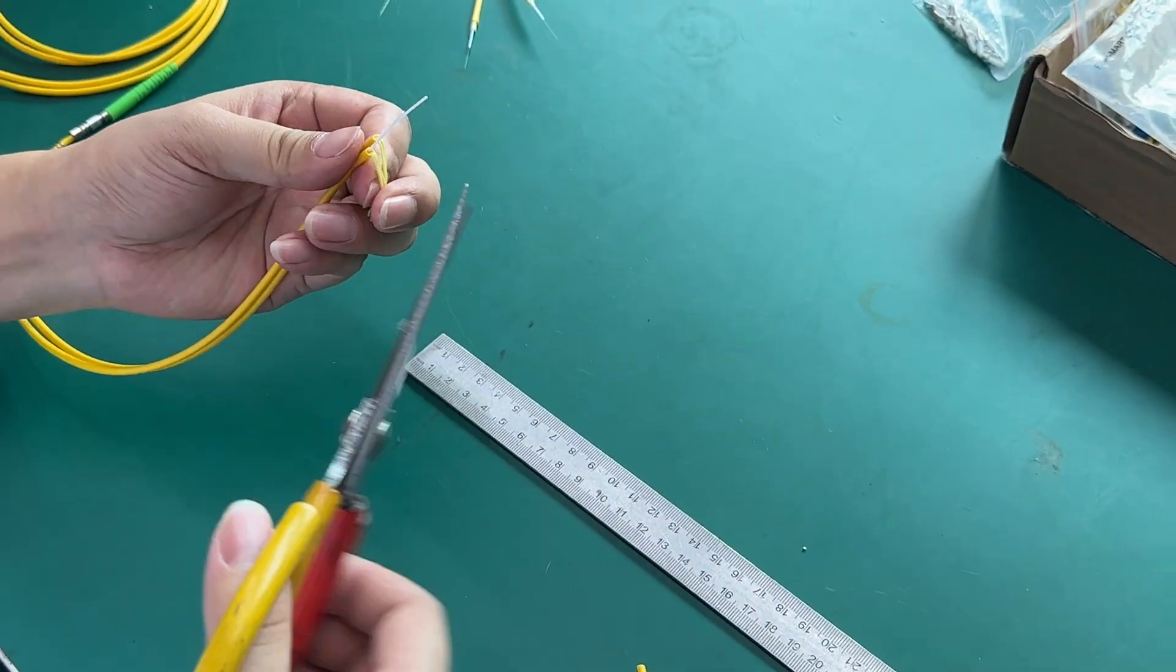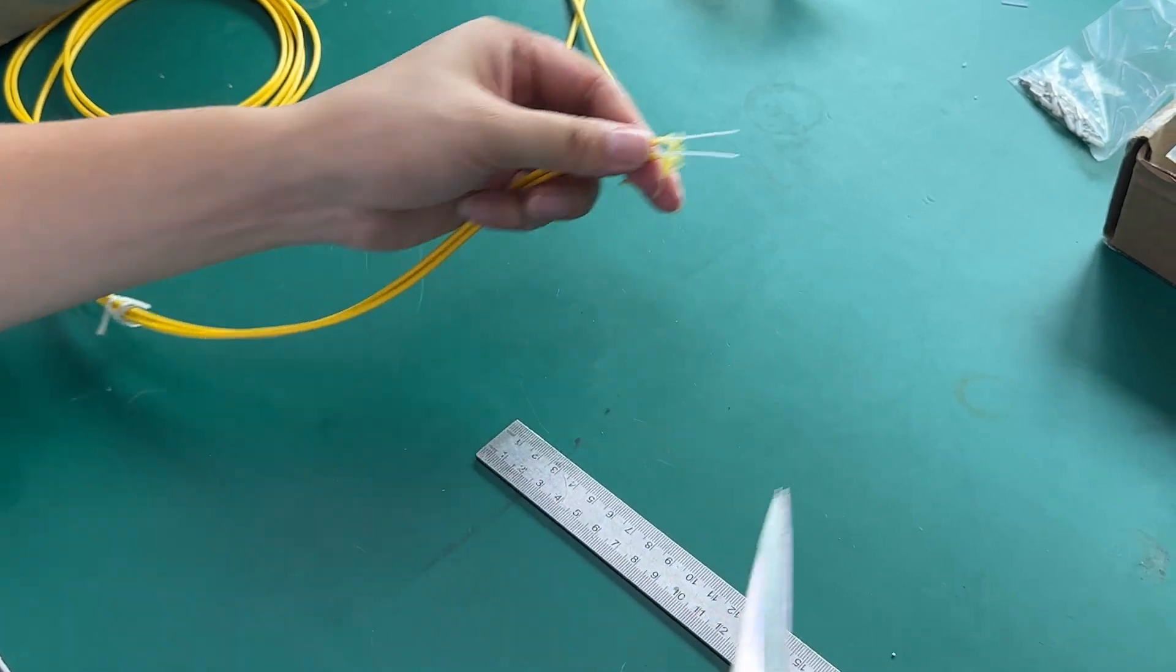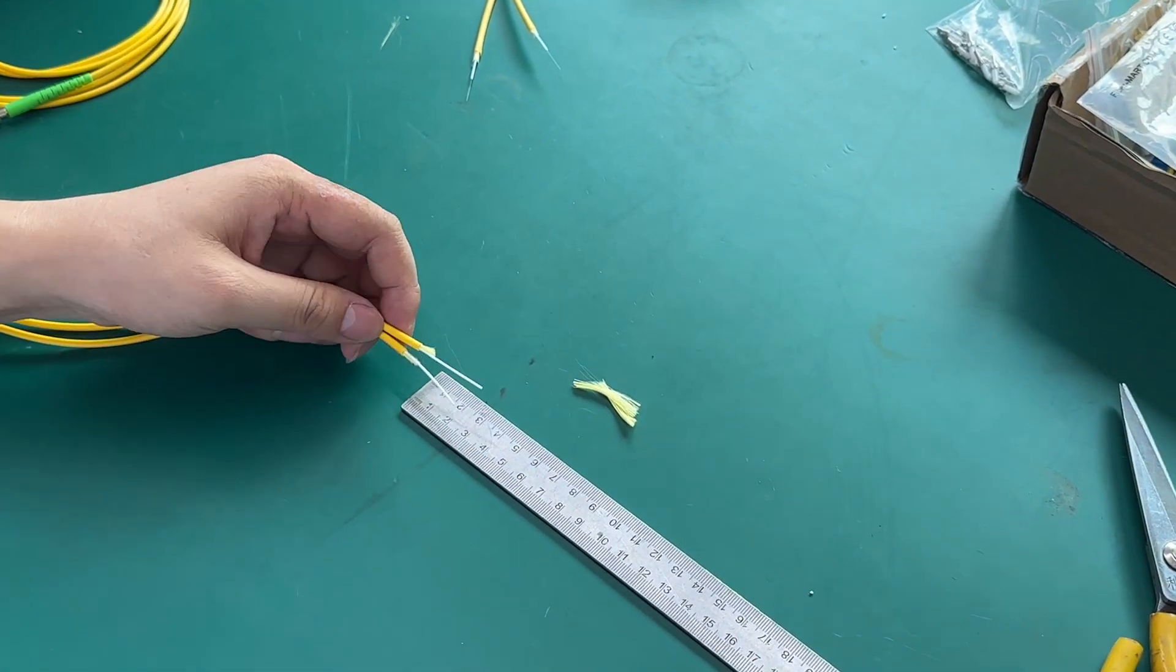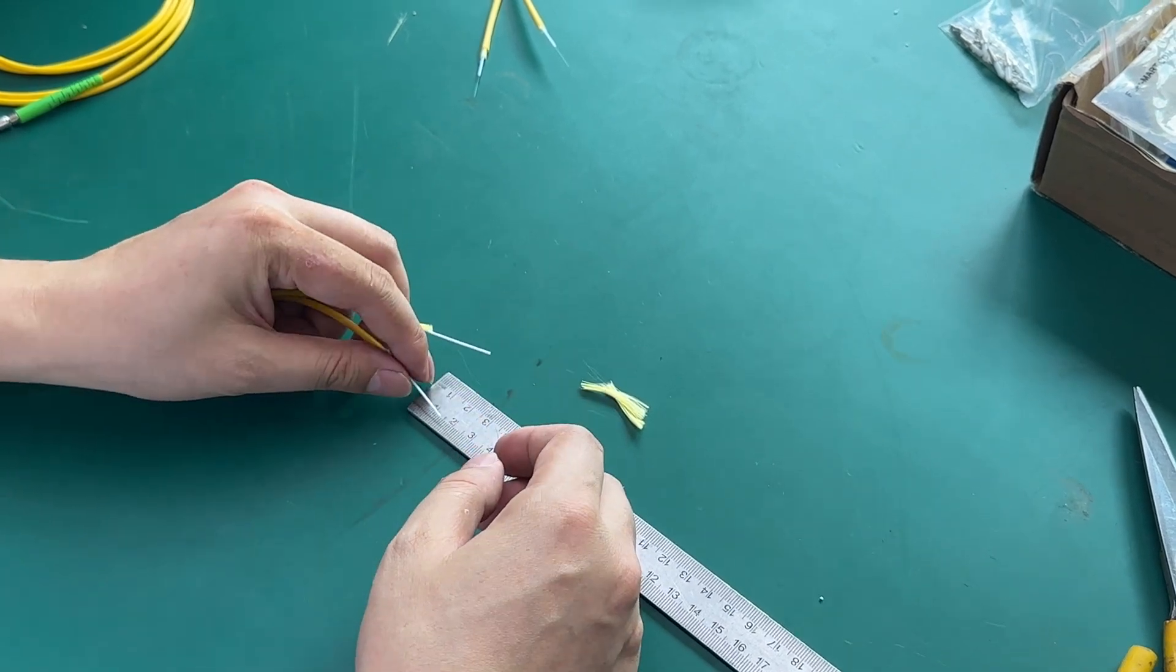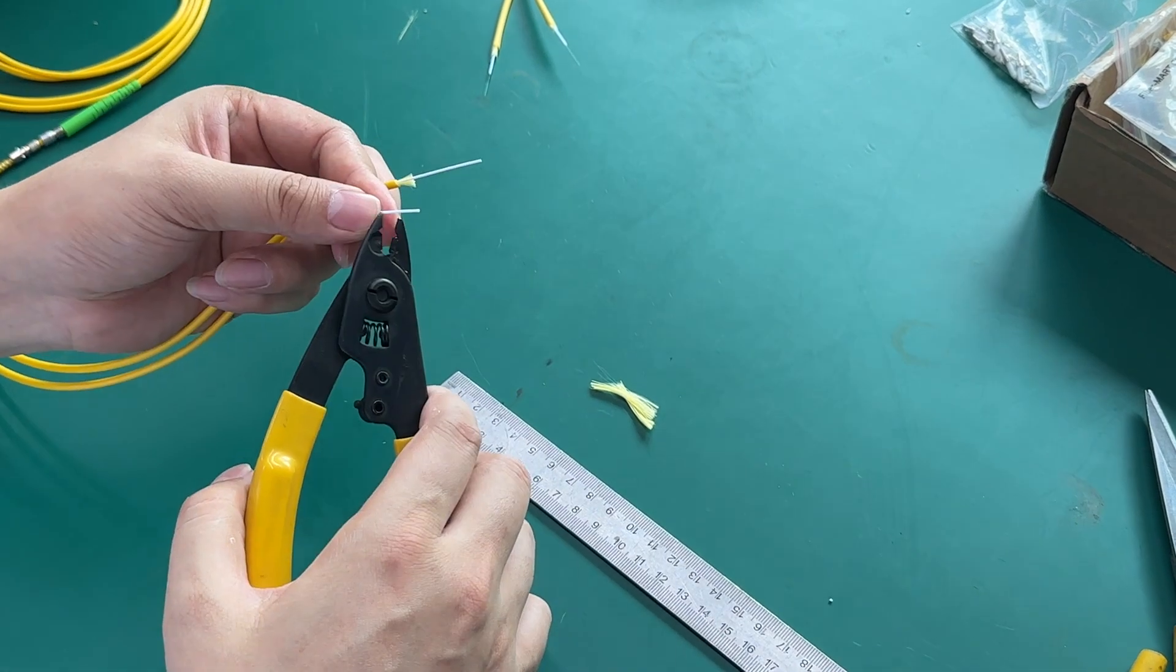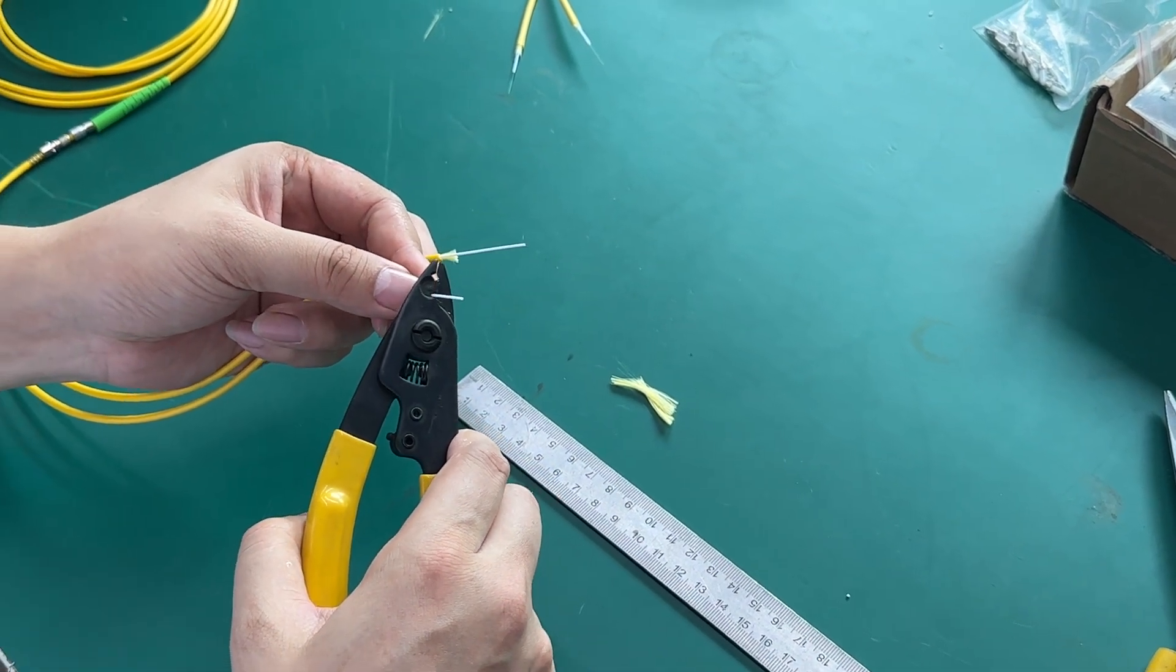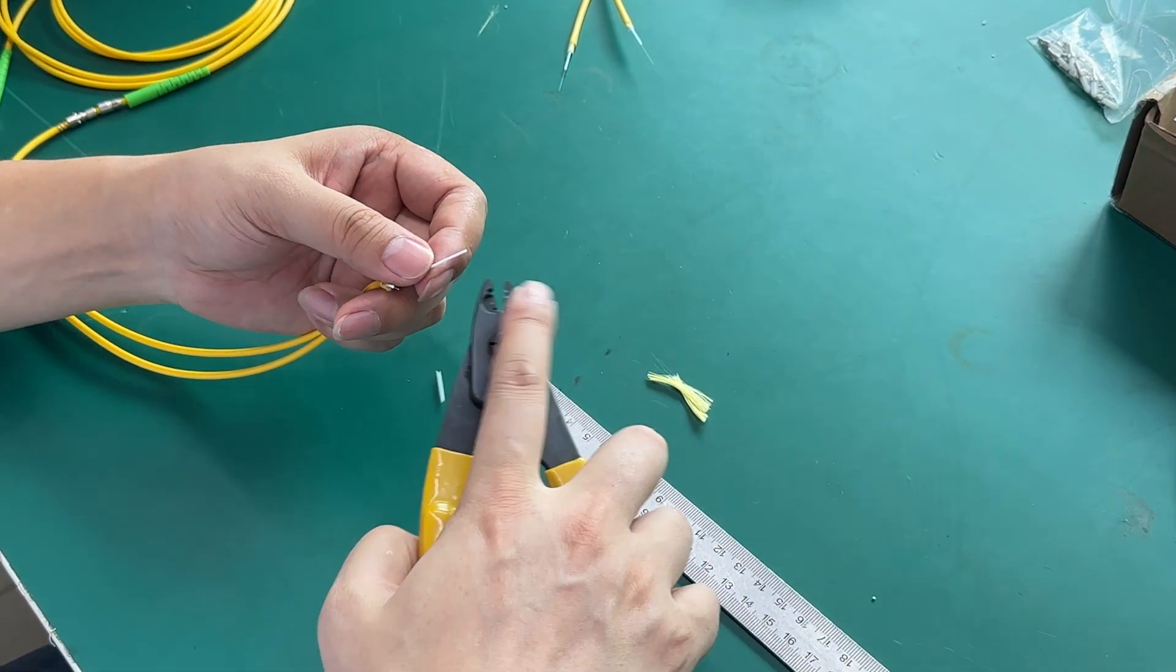Next, we cut the kevlar with scissors. Measure again. We measure 1.5 centimeters and use the stripper to strip the fiber.